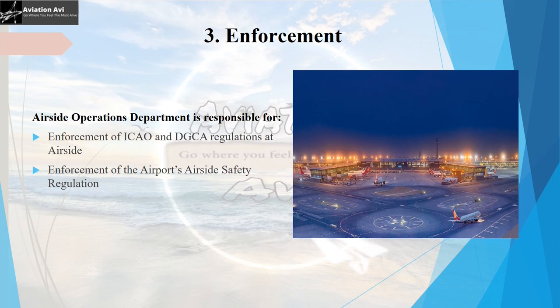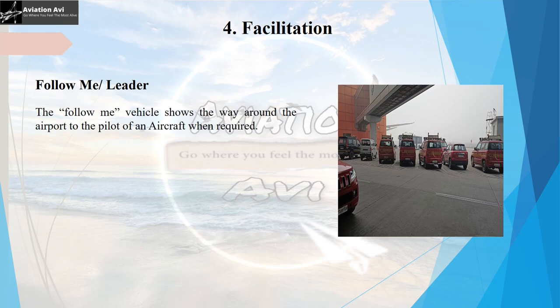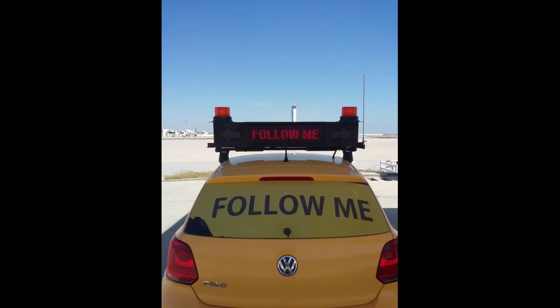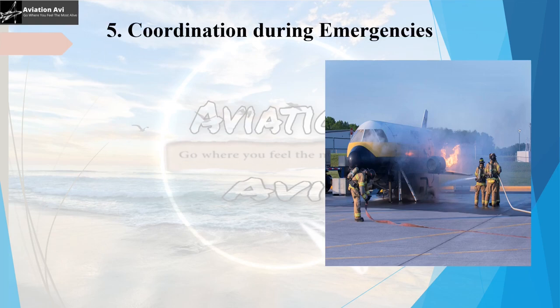The fourth function is facilitation, carried out using follow-me vehicles, also called leader vehicles. As the name suggests, the follow-me vehicle shows the way around the airport to the pilot when required. These vehicles are painted in bright, colorful designs to make them visible even during poor visibility, and have boards fixed on top to provide guidance. The air side operations team also facilitates VIP movements and works being carried out at air side.